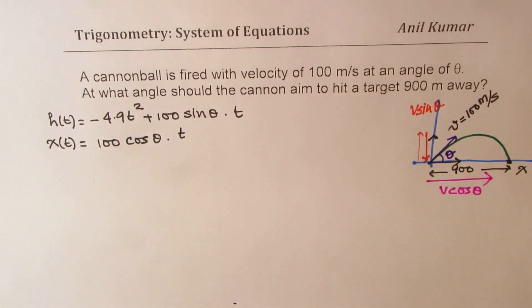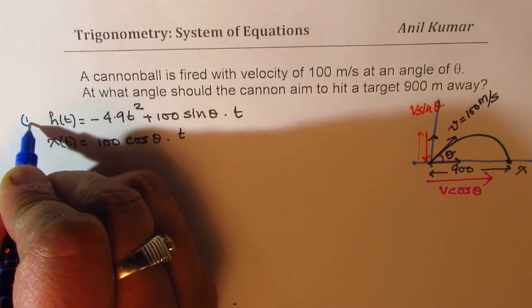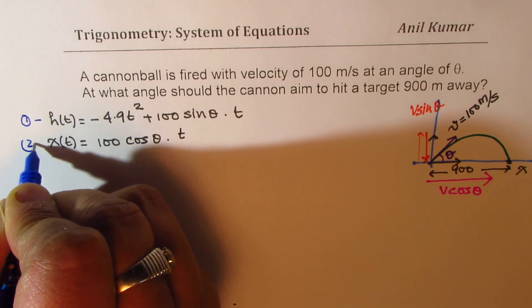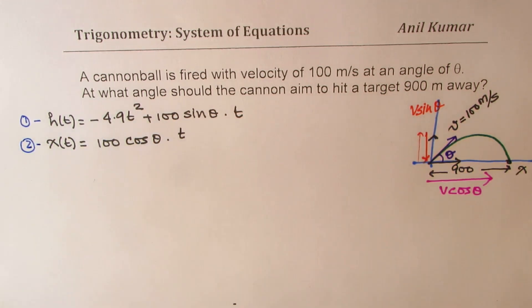So it will be 100 cos theta into time t. So these are the two equations to work with. Solving these equations, let me call them 1 and 2, we should be in a position to find the angle theta. Perfect? So I would like you to pause the video at this stage, think about it, answer the question and then look into my suggestions.